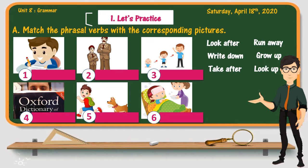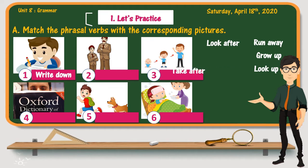Let us correct now. The matching verb for picture number one is write down — the answer is easy because the verb has a literal meaning. You might find it difficult to find the matching verb for picture two, since the verb has an idiomatic meaning. The answer is take after, which means to look like. You may notice that the father and his son look like each other — they resemble each other.